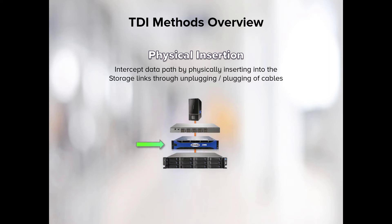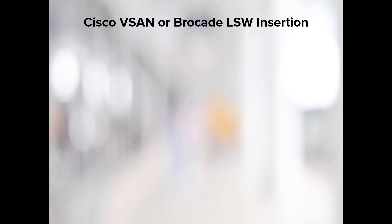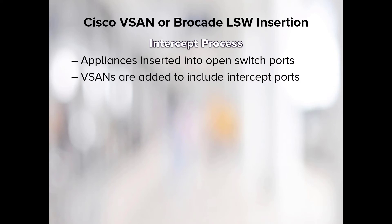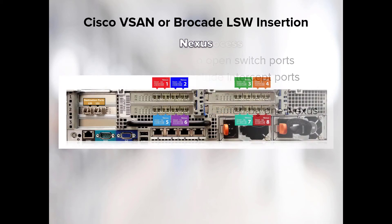The DMS appliance can also be inserted into the data path using physical insertion. This is accomplished by physically inserting the appliance into the storage links by unplugging and plugging in cables for the upstream or downstream. For Cisco vSAN or Brocade logical switch insertion, when existing fiber channel switches support vSAN or logical switch, CDS appliances are inserted into the data paths by connecting to switch ports, and then vSANs are added to include the ports to be intercepted and the nexus ports to use. The desired data paths are thereby intercepted transparently. Multiple links, either host or storage, can be intercepted by a single nexus, allowing for an up to 4-to-1 fan-in. A nexus is a pair of upstream-downstream ports forming the intercept.